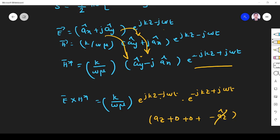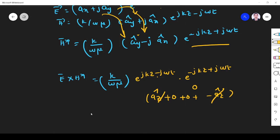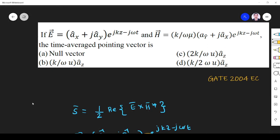So our answer is 0, multiplication factor is 0. So E cross H is equal to 0. This implies S is equal to 0, so it is a null vector.